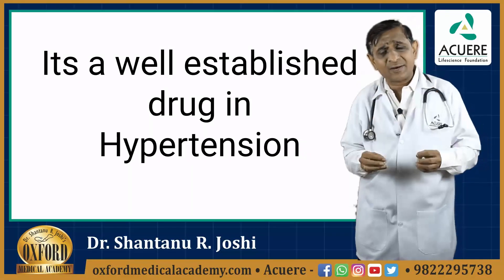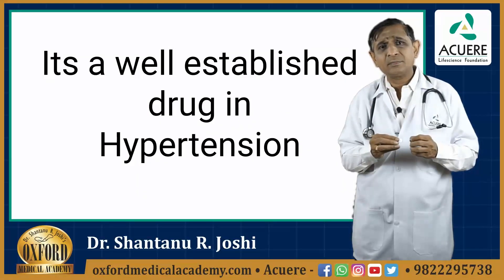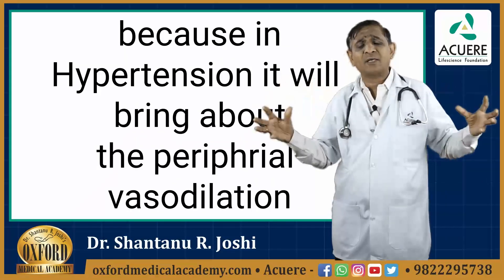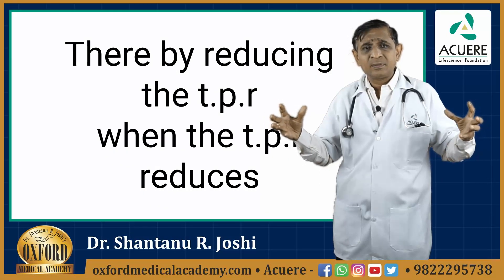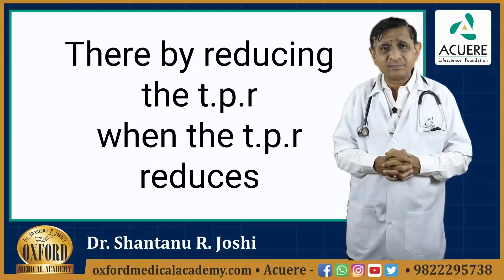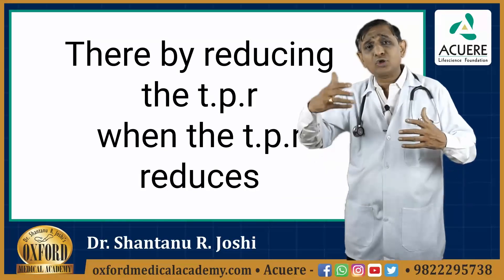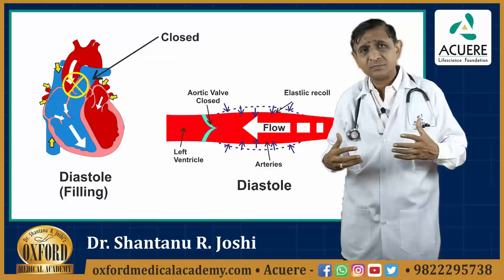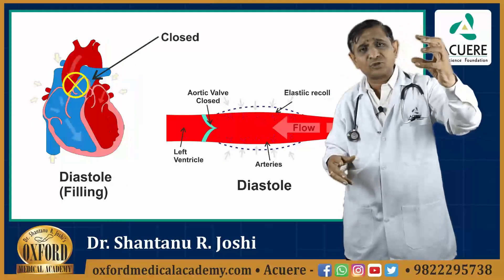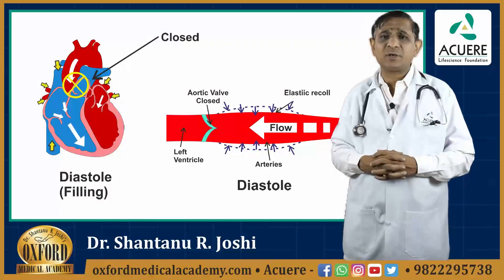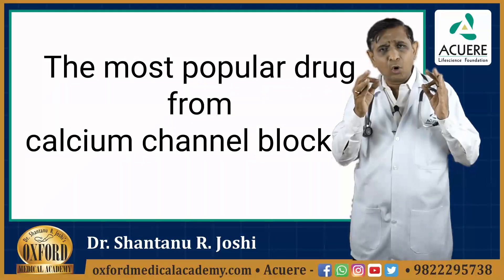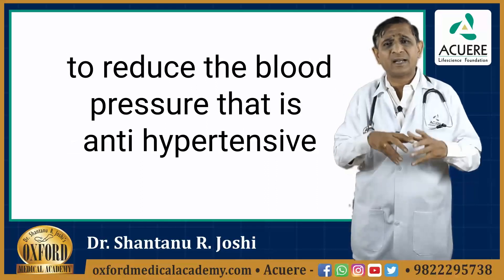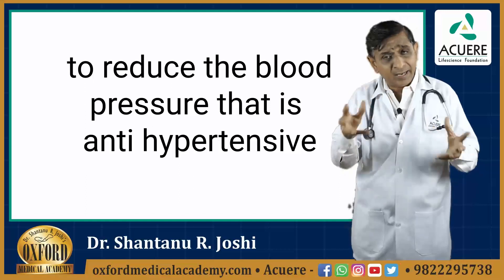It is a well-established drug in hypertension. It brings about peripheral vasodilation, thereby reducing the TPR. When TPR reduces, both systolic and diastolic blood pressure reduce, because TPR is a component of both. That's why currently Amlodipine is the most popular drug from the calcium channel blocker group used as an antihypertensive.